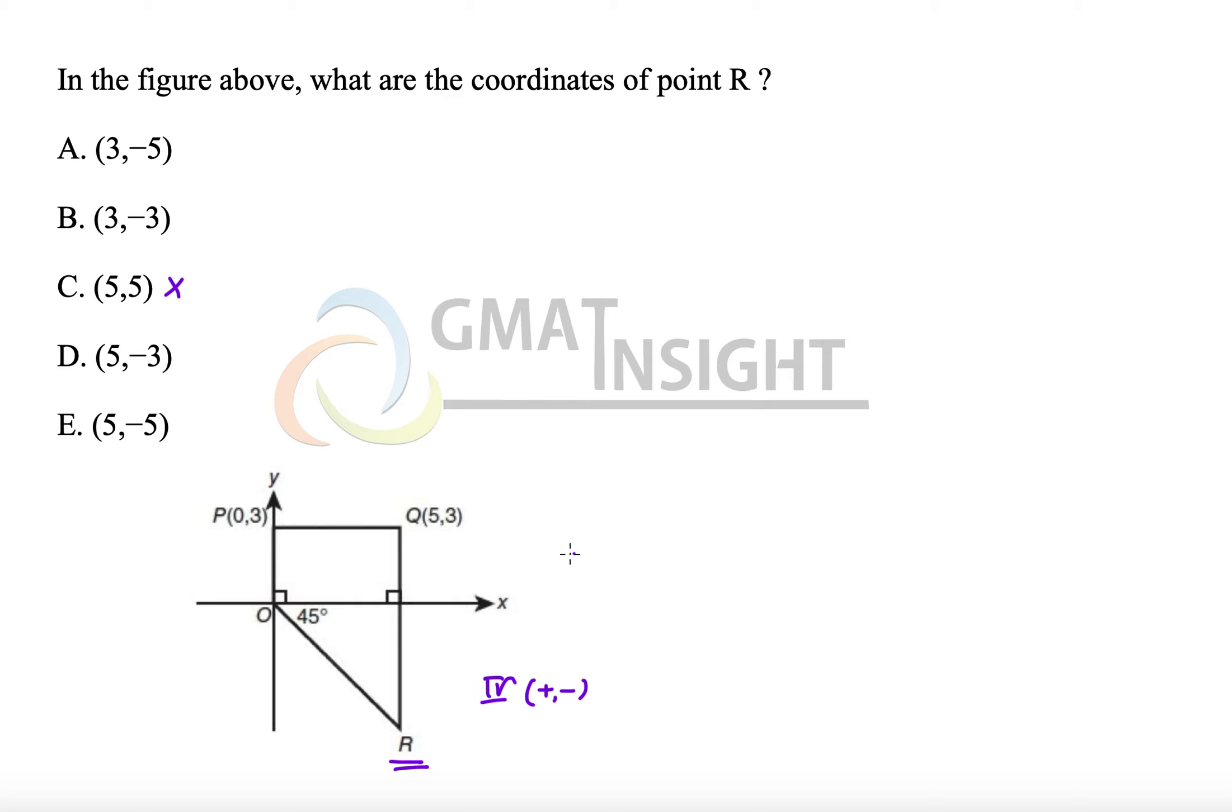Now we have to start using geometry. So now we understand that the x coordinate here is 5 so x coordinate of point R should also be 5. That's one thing.